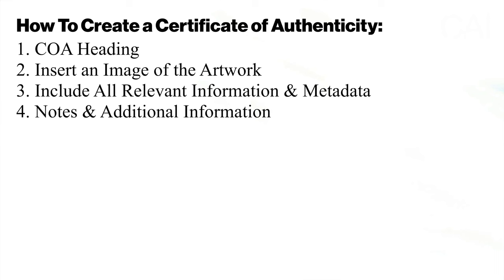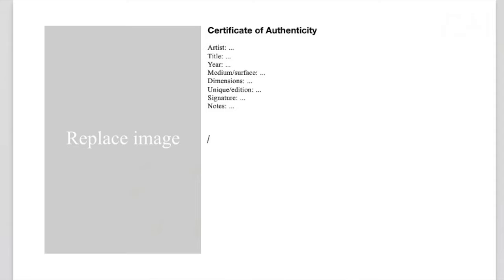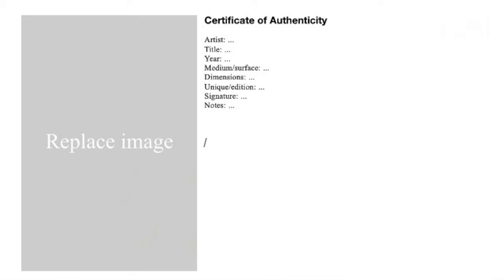Step four: notes and additional information. You can include a section with notes, remarks, or additional information, but only do this if it is relevant or necessary. For instance, writing the meaning of an artwork or an interpretation of it is not relevant from the perspective of a COA. Whereas additional instructions on how to frame it, how to install it, or how to conserve the artwork — these things are relevant for a COA.